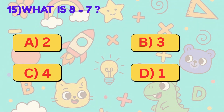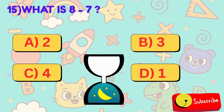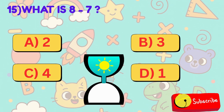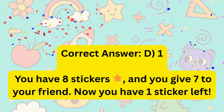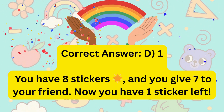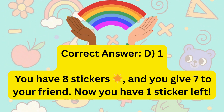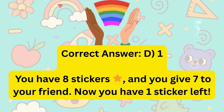15. What is 8 minus 7? Is it A, 2, B, 3, C, 4, or D, 1? Correct answer is D, 1. You have 8 stickers and you give 7 to your friend. Now you have 1 sticker left.